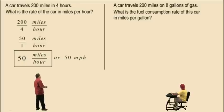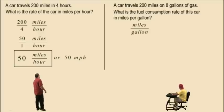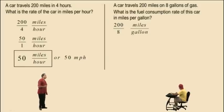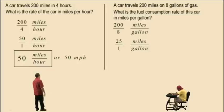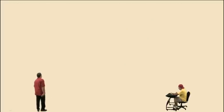A car travels 200 miles on eight gallons of gas. What is the fuel consumption rate of this car in miles per gallon? We are being asked for miles over gallons, so we write 200 over 8. The fraction 200 over 8 has a common factor of 8; if we divide that out we get 25 over 1, which is 25. So our answer is 25 miles per gallon, or 25 mpg.